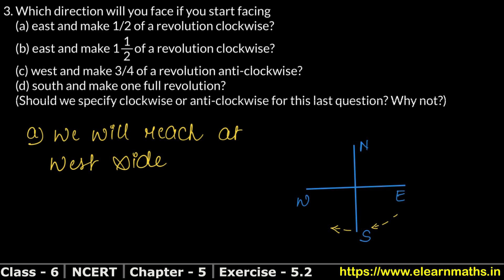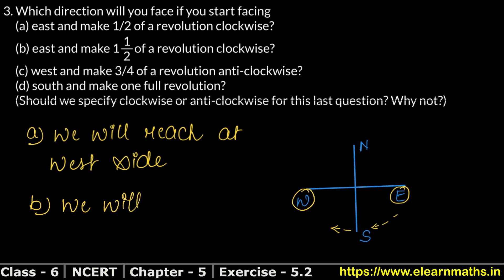Now let's do part B. If you start facing east and make one and a half revolutions clockwise — one and a half means one full revolution plus a half revolution. After one full revolution we are back at east, and then the additional half revolution brings us to west. So part B answer: we will reach the west side.